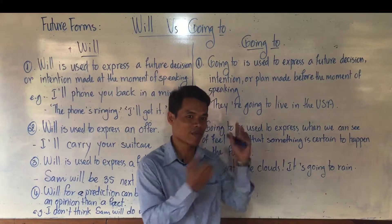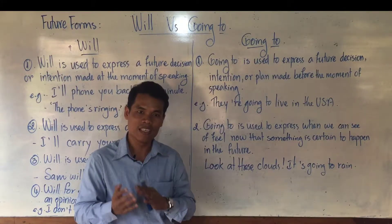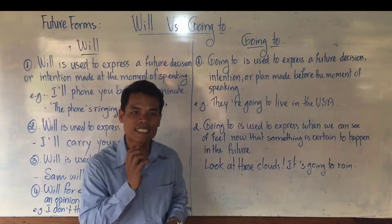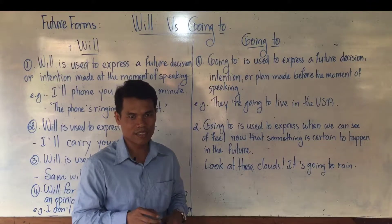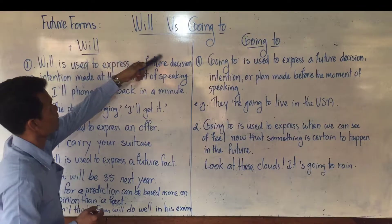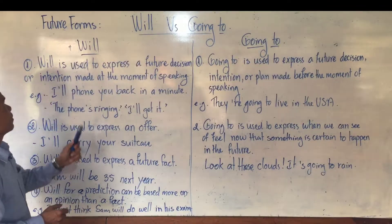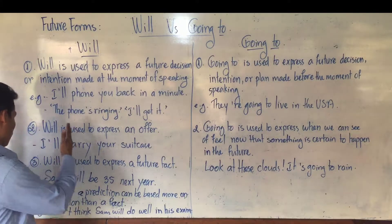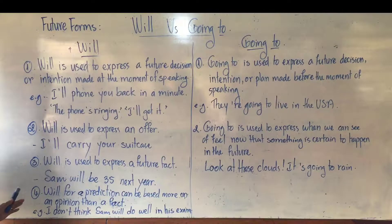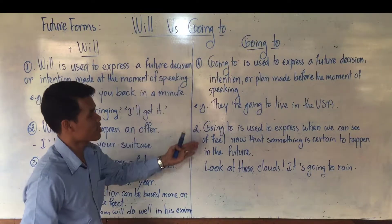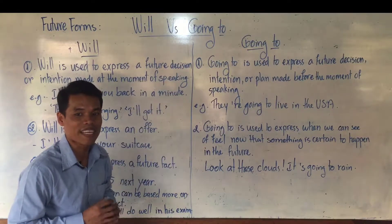Okay, so look at the board with me. In order to distinguish will and going to, we have to learn their usage. So look at the board here. Will — your future forms, will versus going to. How many uses does will have? Based on this, we have four uses of will. And how many uses of going to? Based on this, there are two uses of going to.